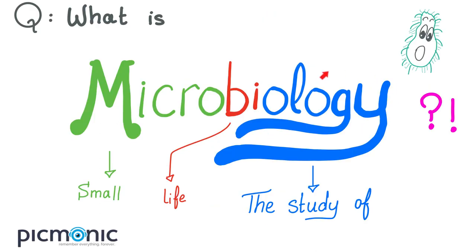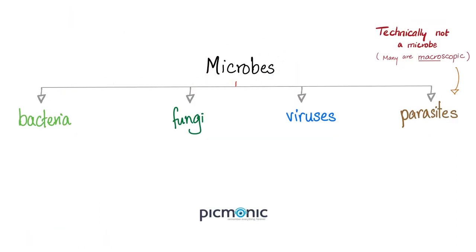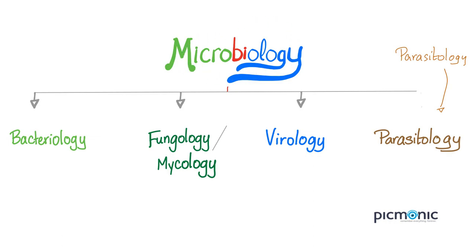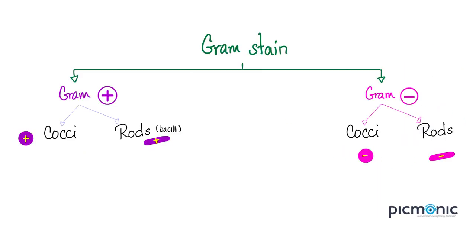What does microbiology mean? -Ology means the study of, bio means life, micro means small — it's the study of small life. Microbes are bacteria, fungi, viruses, and parasites, and that's why the field of microbiology is sub-branched into bacteriology, mycology (fungology), virology, and parasitology. We use gram stain to differentiate between gram positive bacteria, those who stain purple, and gram negative bacteria, those who stain pink.